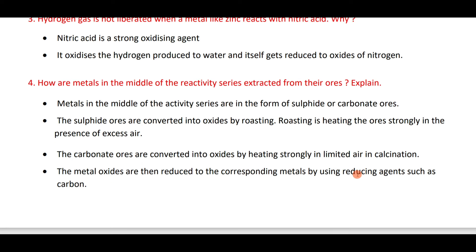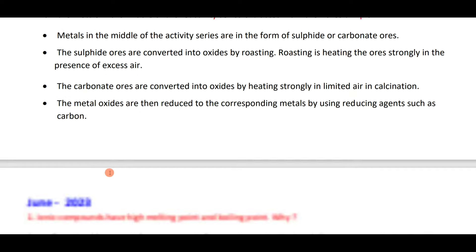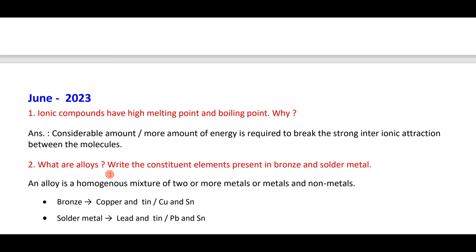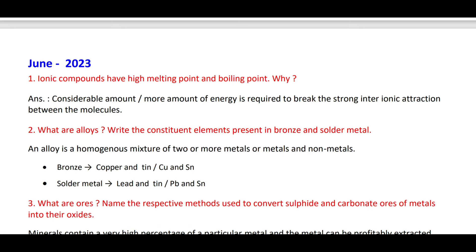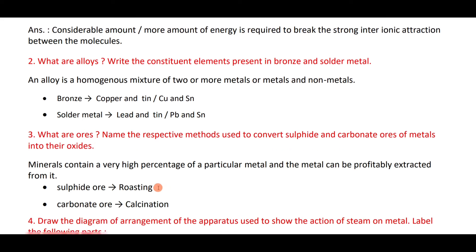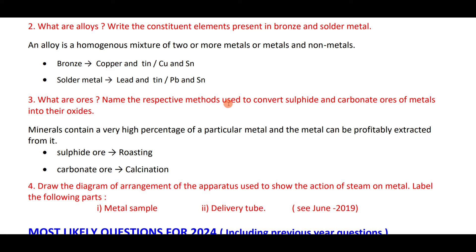Metal oxides are then reduced to corresponding metals using reducing agents such as carbon. Ionic compounds have high melting and boiling points because large energy is required to break the strong intermolecular force. Metal alloys are homogeneous mixtures of two or more metals. Bronze is made of copper and tin; solder is made of lead and tin. Sulfide ores use roasting; carbonate ores use calcination.